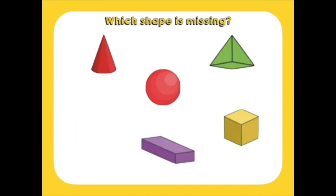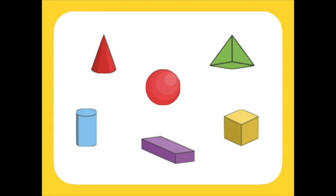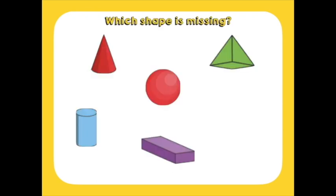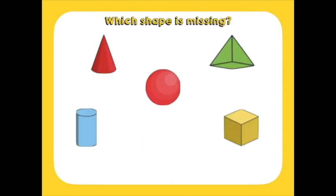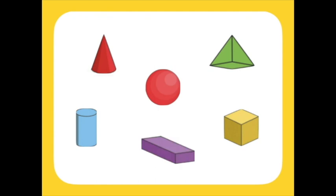Which shape is missing? The Cylinder. Which shape is missing now? Cube. Which shape is missing? Cuboid.